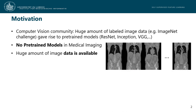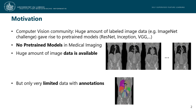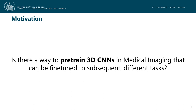While one prerequisite for the success of CNNs in the computer vision community is also fulfilled in the medical domain — we have a huge amount of image data available, and radiologists would be more than glad if we could assist them with automated solutions — the second part poses the main limitation. There is a lack of voxel-wise labelled images to provide the ground truth necessary to learn, for example, organ detection tasks. Nevertheless, with image data available although without labels, we can ask ourselves: is there a way to pre-train 3D CNNs in medical imaging that can be fine-tuned to subsequent different tasks?